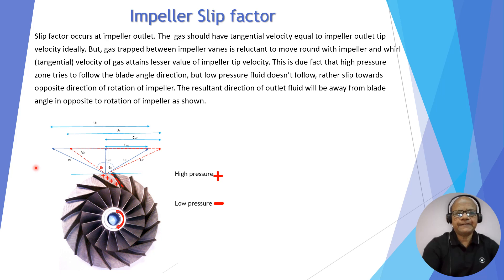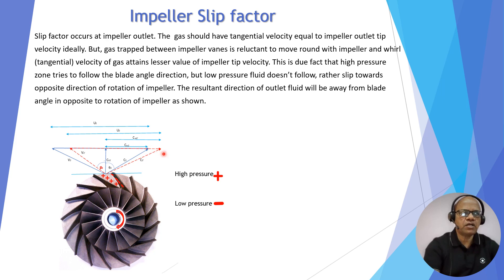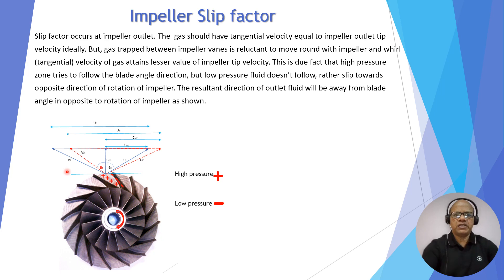Now let us understand the slip factor. Because of the slip, the actual whirl component is reduced — instead of the ideal whirl component cw2-dash, the actual tangential or whirl component is smaller. That is why, due to slip, the performance of the compressor is deteriorated and the discharge pressure is lowered.